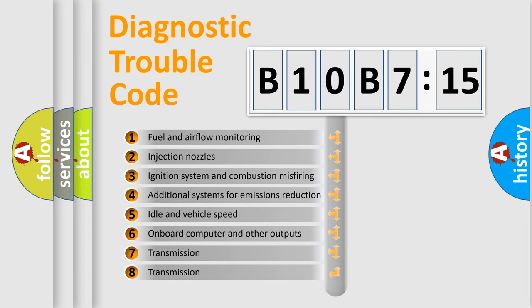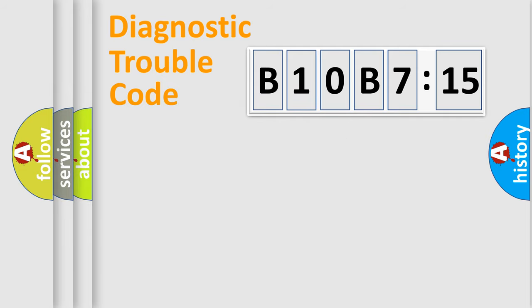The third character specifies a subset of errors. The distribution shown is valid only for the standardized DTC code. Only the last two characters define the specific fault of the group.